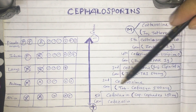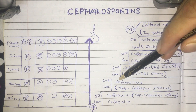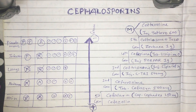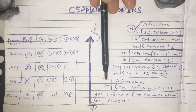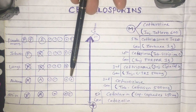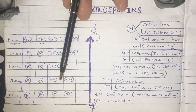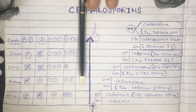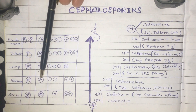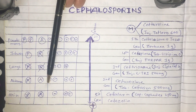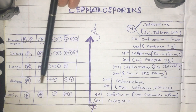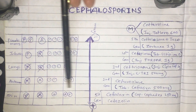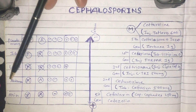Moving to second generation cephalosporins, we have Cefuroxime, available as tablet Cephasin 500 mg for adults and 250 mg for children. Second generation cephalosporins act well on gram-positive organisms, with better gram-negative coverage than first generation. They also have antibacterial activity against anaerobic microorganisms, which are mostly present in the stomach and intestine — making them a better choice for abdominal or intestinal infections.